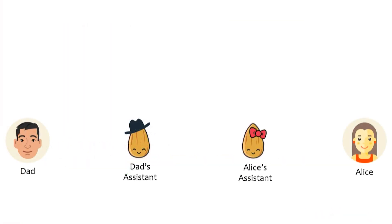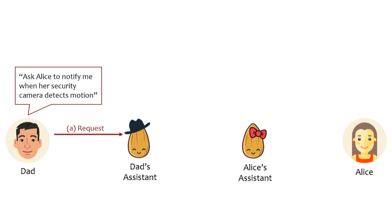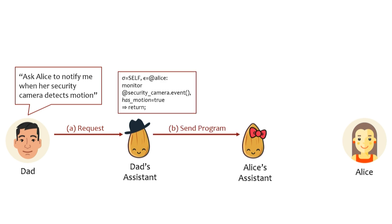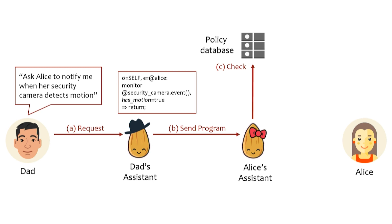Let's look at an example. Imagine a dad wants to help their daughter monitor her house when she is away — the daughter has a security camera. The dad might say, 'ask Alice to notify me when a security camera detects motion.' The dad's assistant translates that into an executable formal program and sends it to Alice's assistant. Alice's assistant is a trusted agent that checks a policy database if the request is allowed. But we are not designing a top-down access control system with administrators defining policies. Instead, we want a system able to understand requests on demand. At the same time, remote execution is very dangerous and users are trained not to accept any request or code. How do we combine those two?